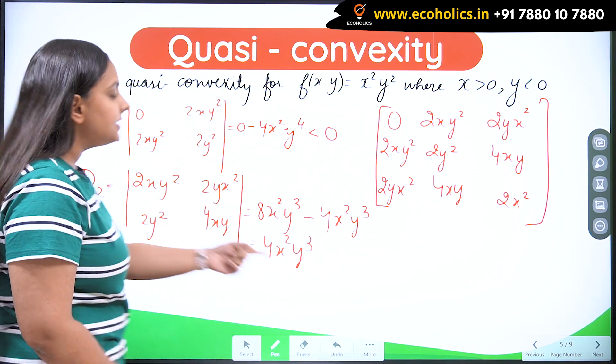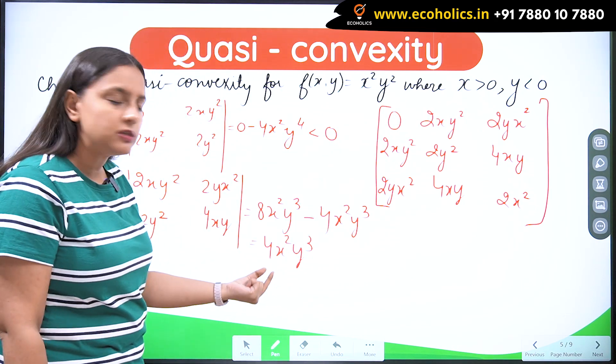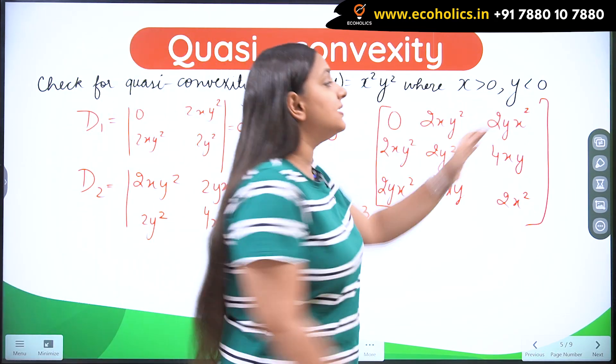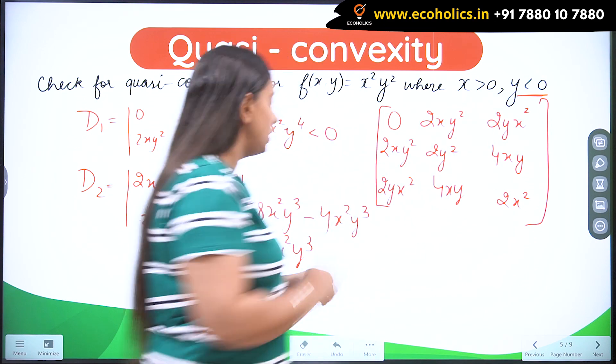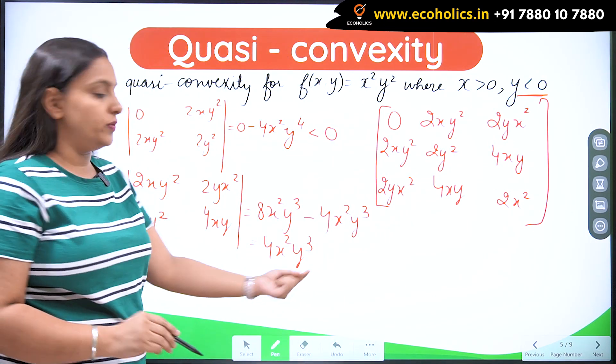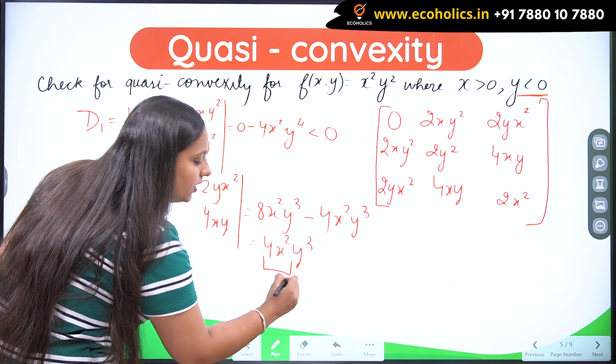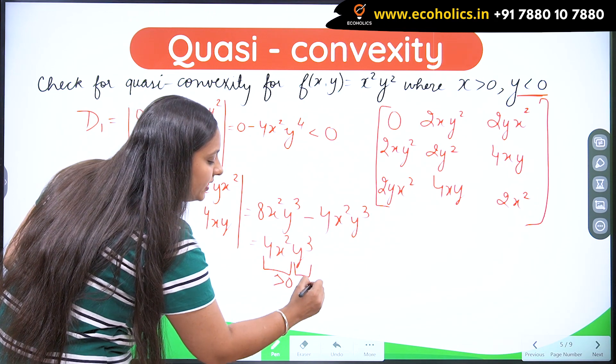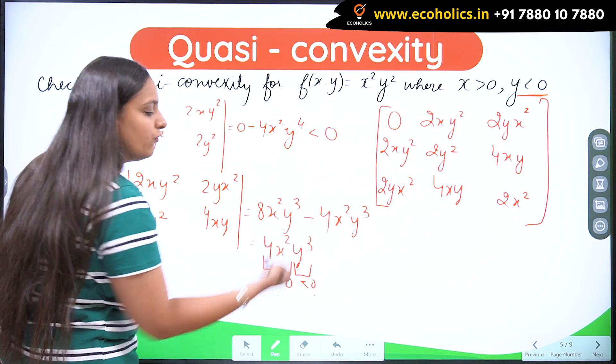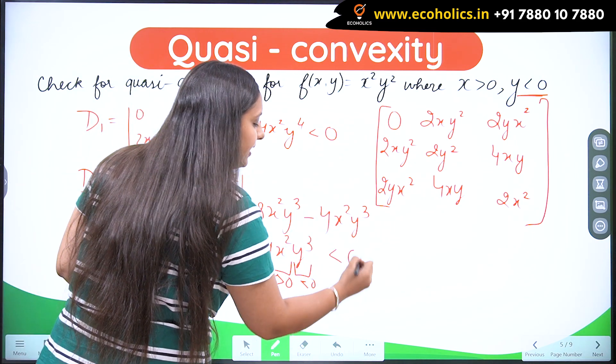Now since x is positive, so x square would be positive. But y is a strictly negative number. So y cube will also be negative. Now this part is going to be positive, whereas this part is going to be negative. So the product of positive and negative would become ultimately negative.